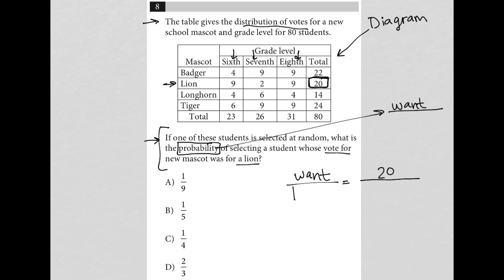My denominator is what you have or the total that you're choosing from. So I'll say total or have. So there were a total of 80 students. So out of the 80 students 20 of them voted for lion.